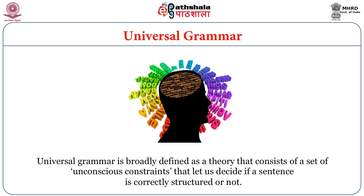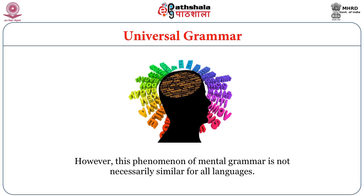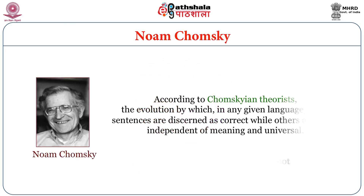These linguists strongly affirm that universal grammar is innate and is embedded in the neuronal circuitry of the human brain. Universal grammar is broadly defined as a theory consisting of a set of unconscious constraints that let us decide if a sentence is correctly structured or not. However, this phenomenon of mental grammar is not necessarily similar for all languages. According to Chomskyan theories, the process by which sentences are discerned as correct or incorrect is independent of meaning and universal.